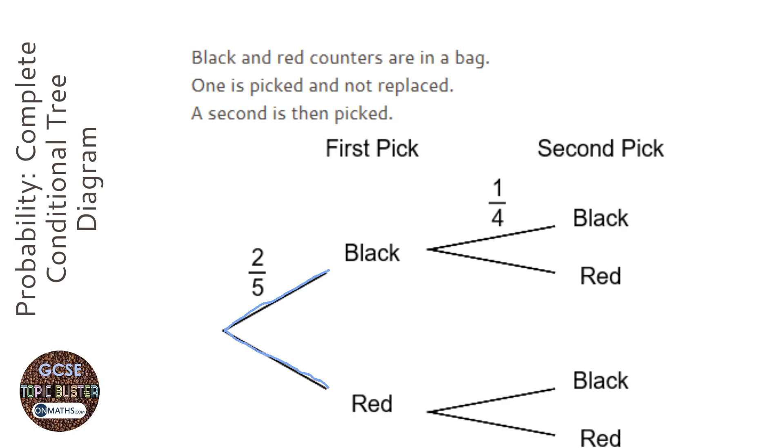So if the top one is a two fifths chance, then the bottom one has to be a three fifths chance.